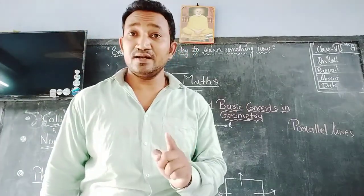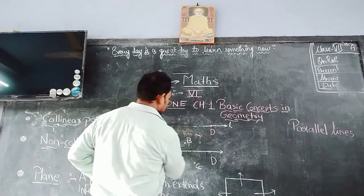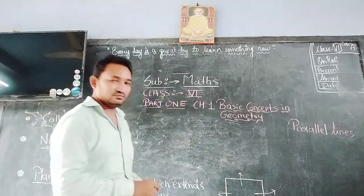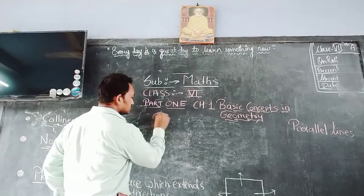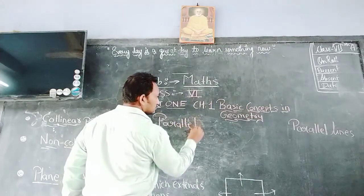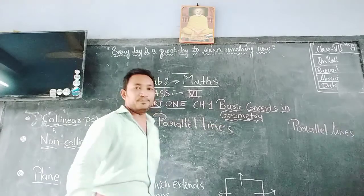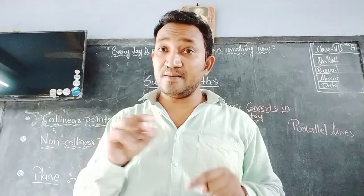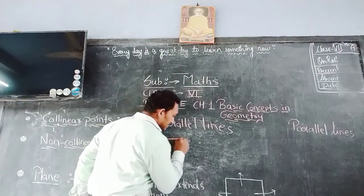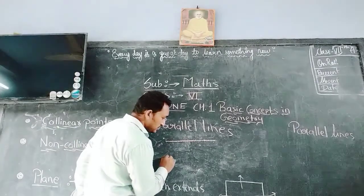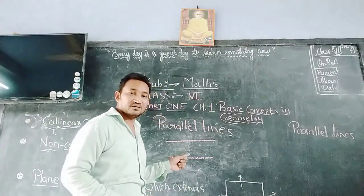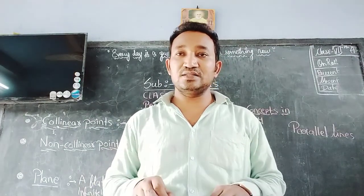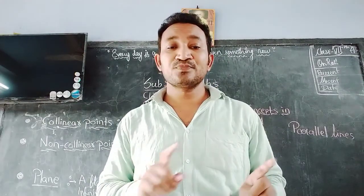Now we will look at parallel lines. Lines which lie in the same plane — means एक line के बराबर उसी के नीचे दूसरी line भी होनी चाहिए — on the same plane. And they do not intersect each other — वो lines एक दूसरे से intersect भी नहीं करनी चाहिए.